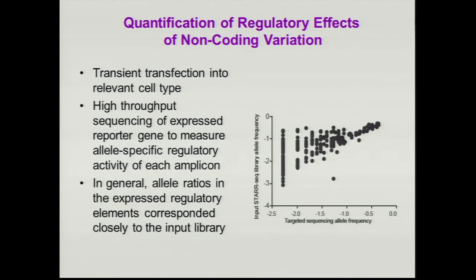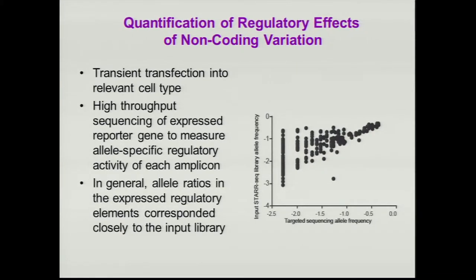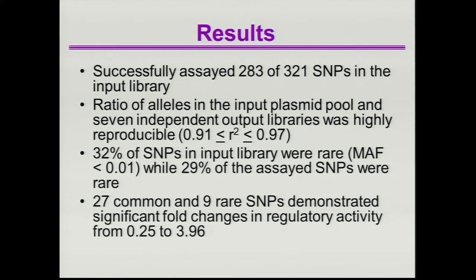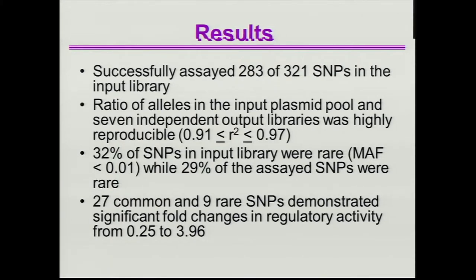There was a fairly good correlation between the targeted sequencing allele frequency versus the frequency in the input library, with outliers being fragments containing variants that affect gene expression. Across this region, data were done initially using fragments from 95 individuals. There were 321 SNPs identified among those individuals, 283 of which were successfully assayed, with high concordance between replicate experiments. About 32 percent of the SNPs were rare, defined as minor allele frequency less than 1 percent, and 29 percent of the assayed SNPs were also rare, suggesting rare SNPs weren't being lost.